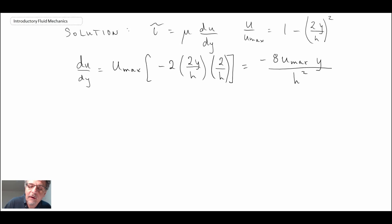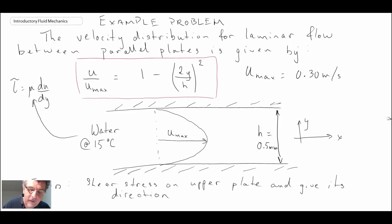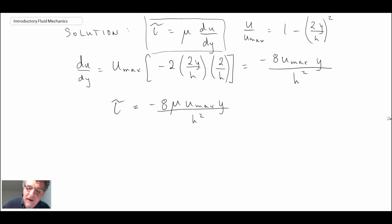We know from our Newtonian relationship between shear stress and shear rate that tau is equal to minus 8 mu u_max y divided by h squared. Let's plug in the values and see what we get. Looking up the value for water at 15 degrees C, viscosity is equal to 1.3 times 10 to the minus 3 kilograms per meter second. Let's plug the numbers in and see what we compute.